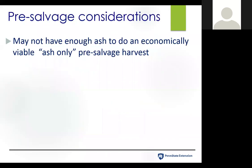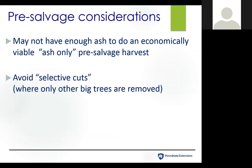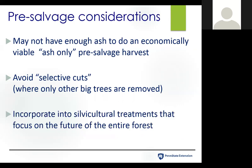A couple other considerations, primarily on the private landowner side or for smaller acreages: if you're doing a pre-salvage of ash, you're really not likely to have enough ash to do an economically viable ash-only harvest. I always remind private landowners about avoiding so-called selective cuts — don't just cut all the other big trees out to make this salvage operation economical. Think about incorporating it into a silvicultural treatment that really focuses on the future of the forest, whether it's the residual trees or the regeneration.